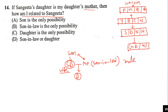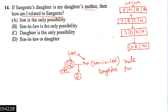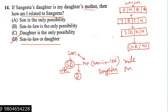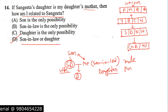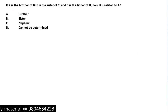If Sangeeta's daughter is my wife, then how am I related to Sangeeta? I am son-in-law if I am male, otherwise if I am female then I am the daughter of Sangeeta. So option D should be the correct answer. Quite easy — basically Sangeeta's daughter is my wife, that's how the relationship comes in.